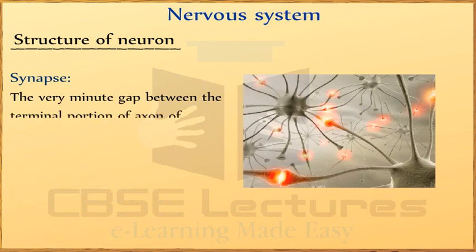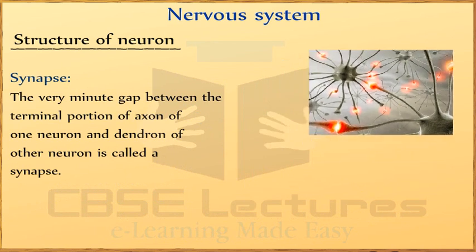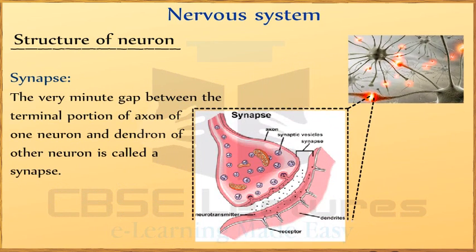What is synapse? The very minute gap between the terminal portion of the axon of one neuron and the dendrites of another neuron is called synapse.